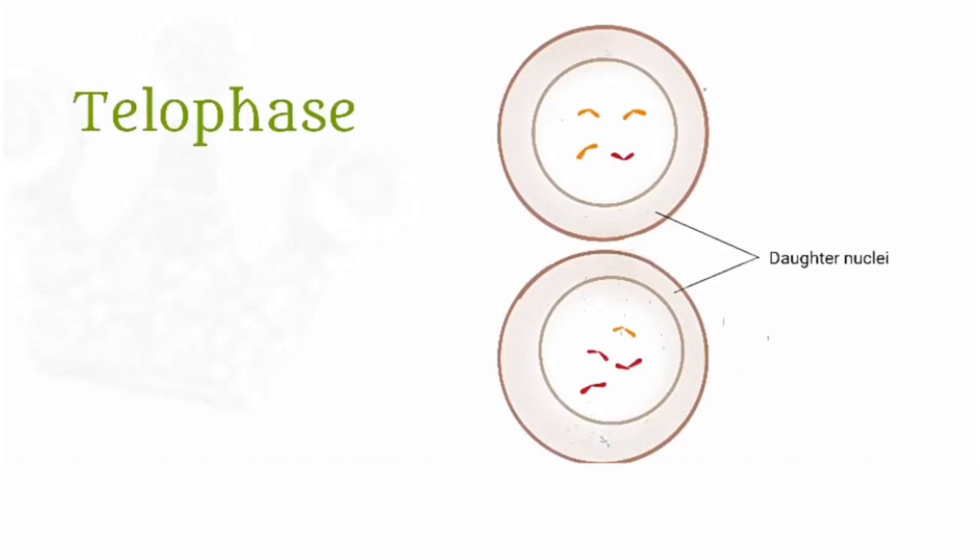Then in the telophase, which is the final phase of mitosis, the daughter nuclei are formed and the nuclear envelope reappears.